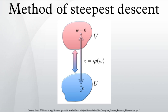The integral to be estimated is often of the form where C is a contour and I is large. One version of the method of steepest descent deforms the contour of integration so that it passes through a zero of the derivative G' in such a way that on the contour G is real and has a maximum at the zero. The method of steepest descent was first published by Debye, who used it to estimate Bessel functions and pointed out that it occurred in an unpublished note by Riemann about hypergeometric functions.